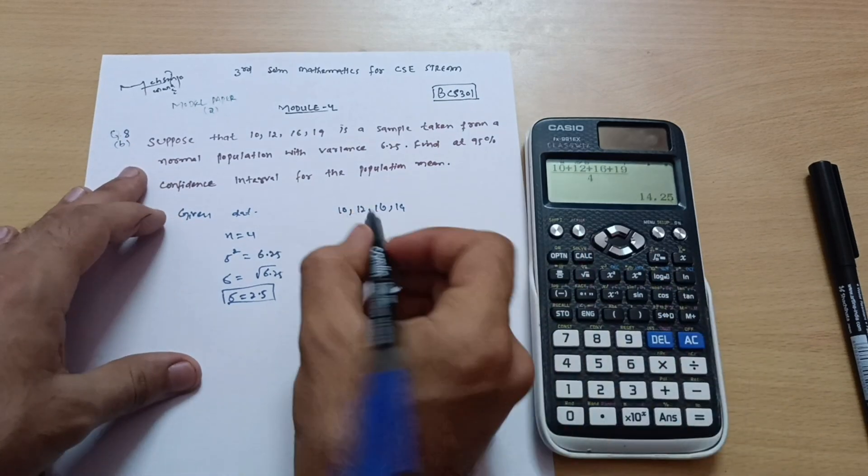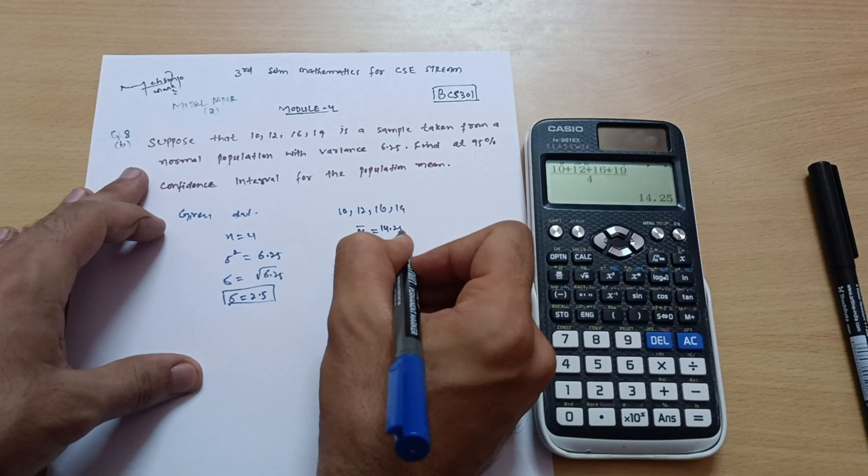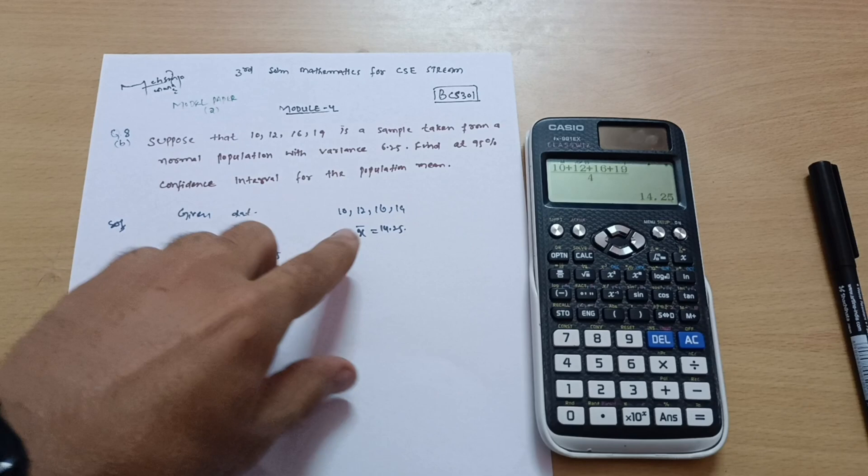Which is equal to 14.25. So I can write here as x bar is equal to 14.25. This is the mean which is given in the problem. Sometimes we have to calculate this one and we represent it as x bar.